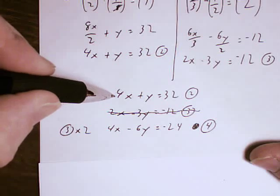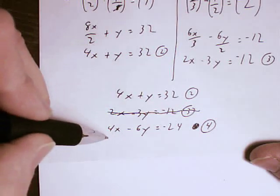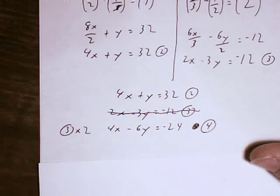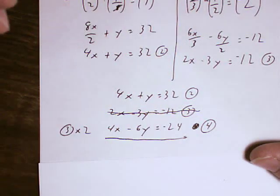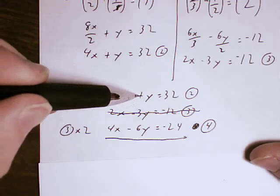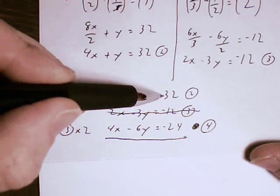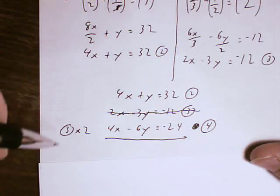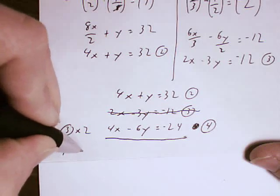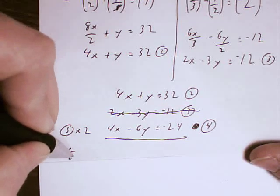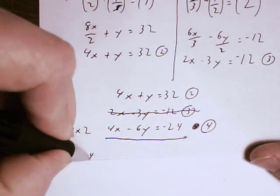Now I've got a 4x plus a y equals 32 and a 4x minus a 6y equals a negative 24. If I just subtract one equation from the other, I will eliminate one variable. So as I always like to deal with positive numbers where possible, I'm going to do the positive minus the negative. So I'm going to do equation 2 minus equation 4.